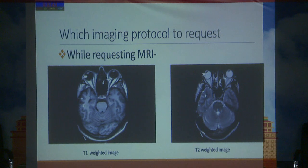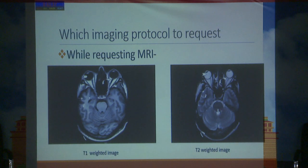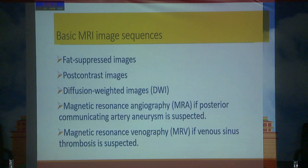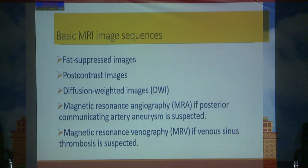While requesting MRI we have to look for T1 and T2 weighted images. In T1 the vitreous appears dark and the intraorbital fat appears bright, and in T2 the vitreous appears bright. Other basic MRI sequences include the fat-suppressed image, diffusion weighted image, MRA — for suspected PCI aneurysm — and MRV when we suspect cavernous venous sinus thrombosis.